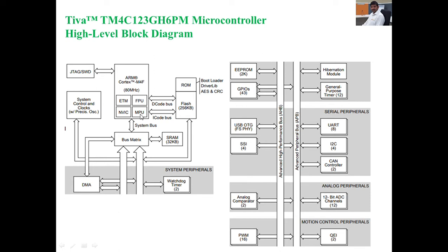Next, the memory protection unit: if anyone unauthorizedly accesses the data, that will be prevented by the memory protection unit. It also contains a D-code bus for accessing data and an I-code bus for accessing instructions — I means instructions, D means data.